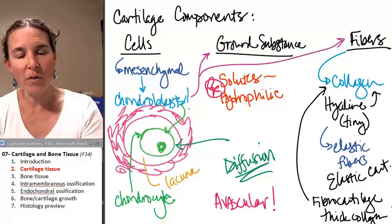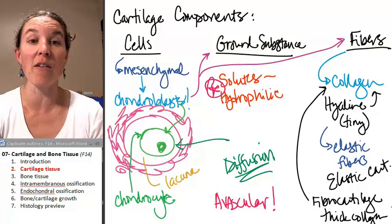All right. You have a view of cartilage. Now let's talk about our different kinds of bone tissue.